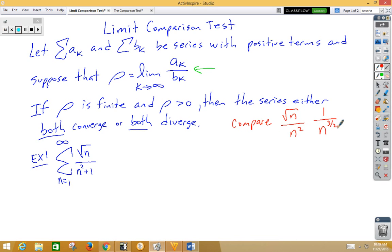Well, that is the convergent p series. It's a hyperharmonic. So we believe it's going to converge. So if we can prove that rho is greater than zero, then we know that both of these things converge.